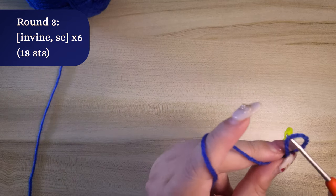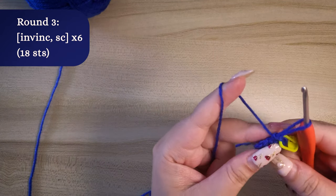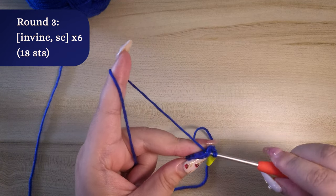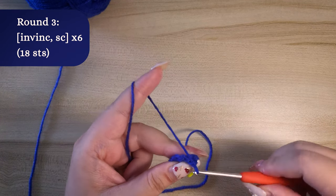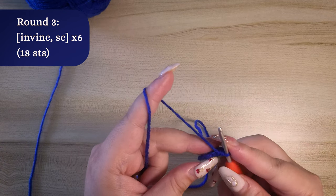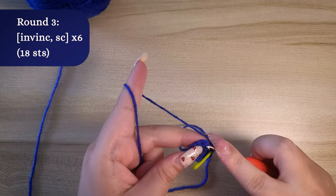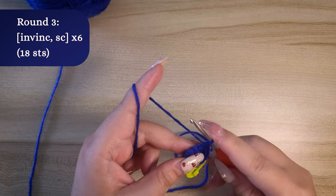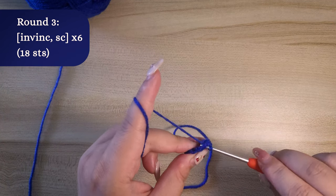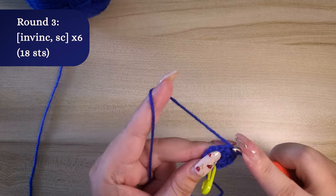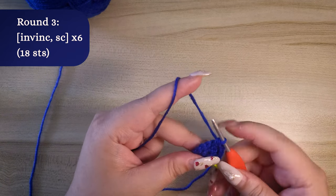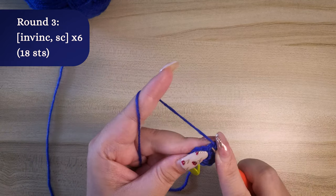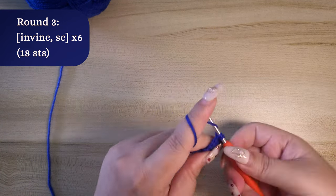Next, we'll be doing one single crochet. We'll be repeating this pattern five more times. So first, invisible increase and then follow with single crochet five more times.